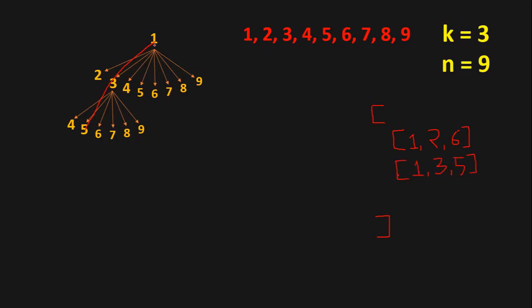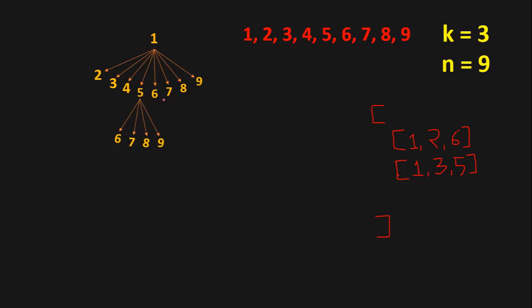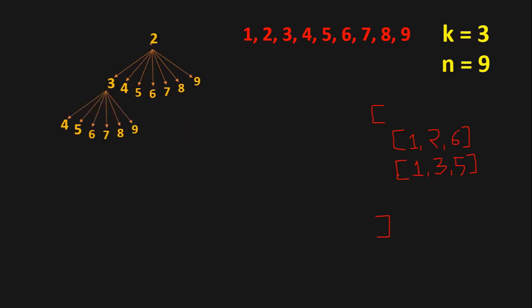Then 1,3,6 — 1,3,7 — 1,3,8 — 1,3,9 all exceed 9. For the pair 1,4, the sums of all combinations are more than 9. Similarly for pairs 1,8 and 1,9, there are no valid choices on the right. So we're done with the first choice of 1.